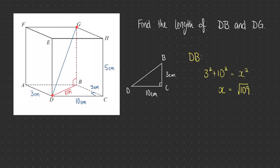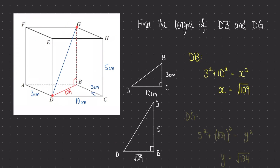If we're struggling to see that this is a right angle triangle, or struggling to figure out how to use Pythagoras or trig, we can always do a quick sketch on the side. So we're going to draw on DBG. We know that the base length is root 109, and we know that BG must be the same as HC because we have a cuboid, so this must be 5 cm. Now that we have two sides of our right angle triangle, we can use Pythagoras to find the third. And if we solve that, we will find that DG is equal to the square root of 134. So this question shows us that we can use Pythagoras in objects that are three-dimensional, not just two-dimensional triangles. As long as we can find right angle triangles inside of our cuboid, we're allowed to use Pythagoras.